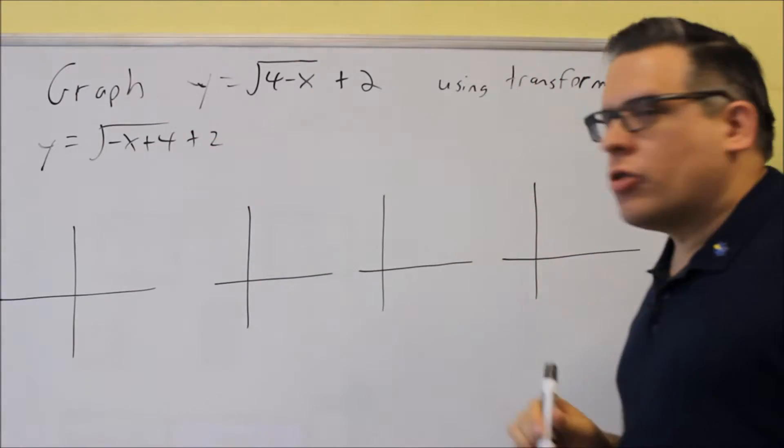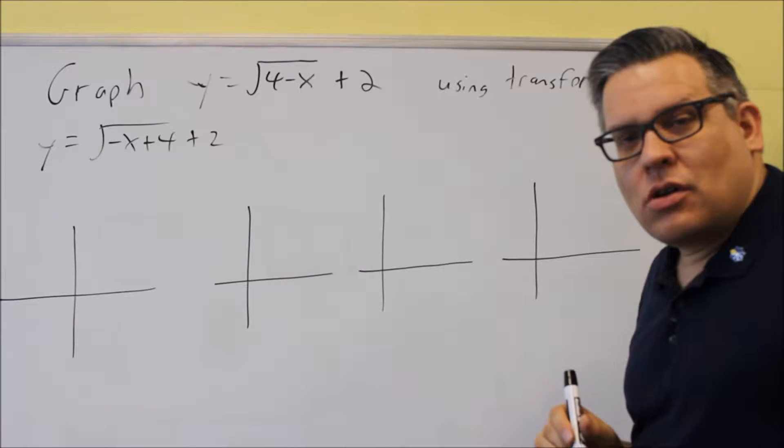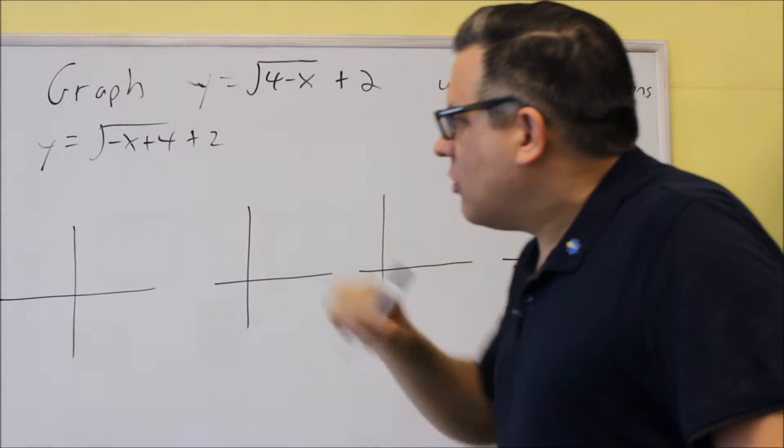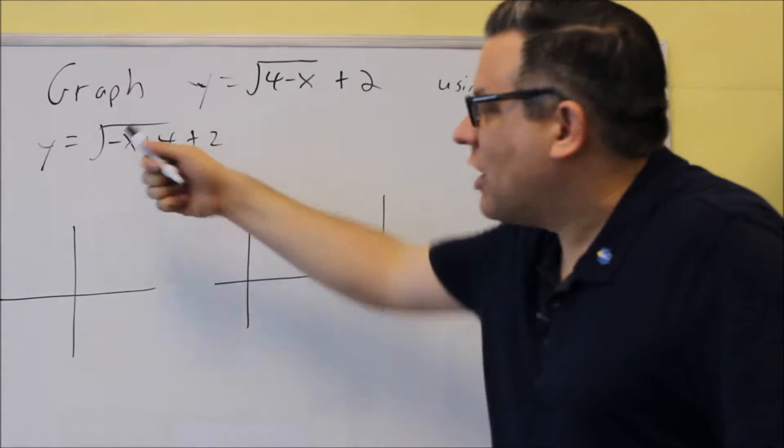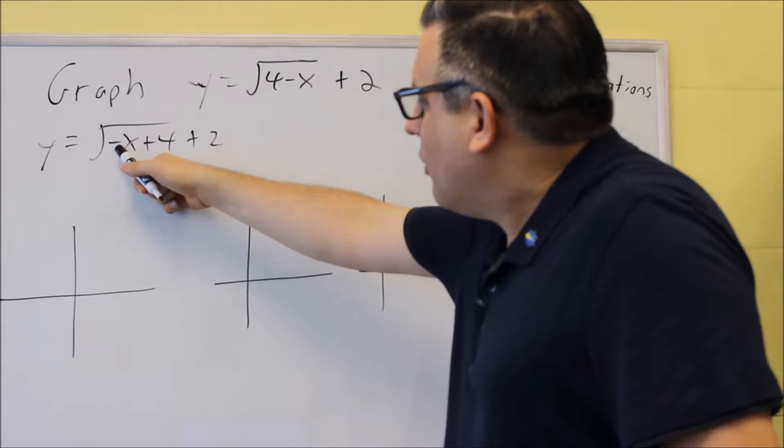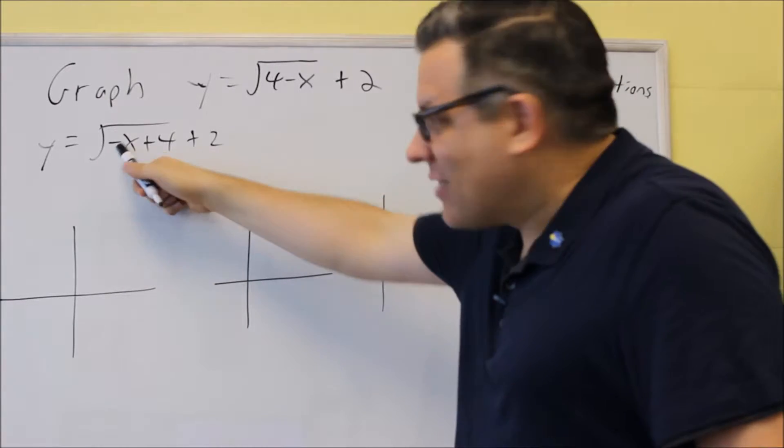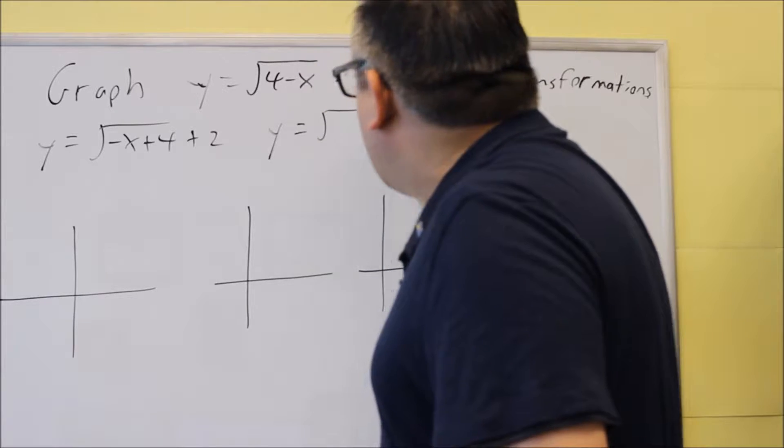So, first step, switch the order around. The negative still has to stay with the x. But, we don't want to just leave it there because transformation rules say that you've got to have a positive x in front. So, I need to factor out a negative there, and that way the x ends up being positive.